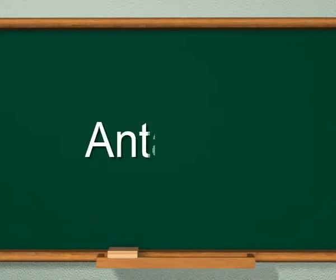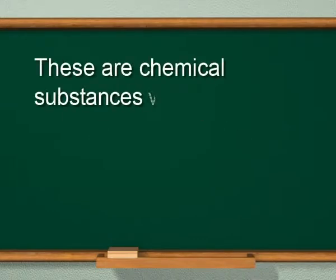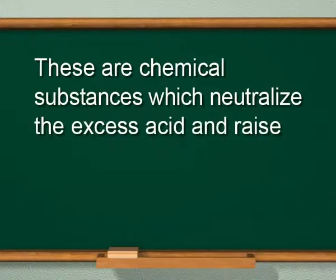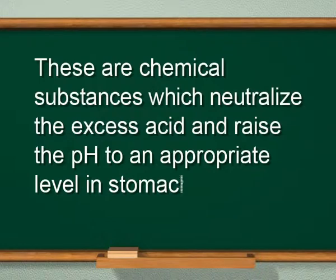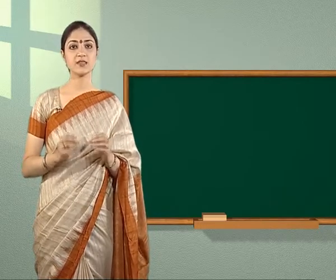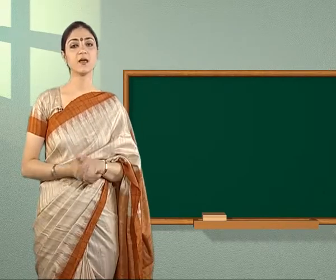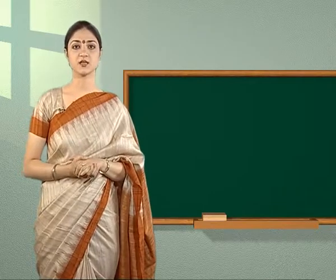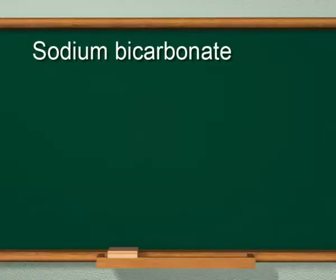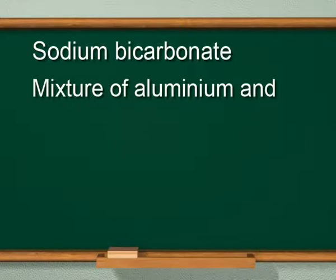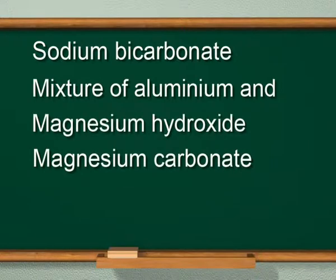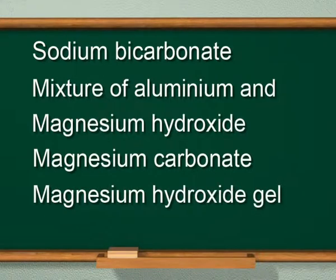Types of drugs - Antacids: these are chemical substances which neutralize the excess acid and raise the pH to an appropriate level in the stomach. Overproduction of hydrochloric acid in the stomach causes irritation and pain. In severe cases, ulcers are produced in the stomach. The most commonly used antacids are weak bases such as sodium bicarbonate, a mixture of aluminum and magnesium hydroxide, magnesium carbonate, magnesium hydroxide gel and aluminum phosphate.